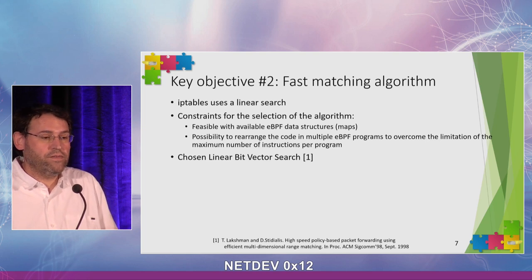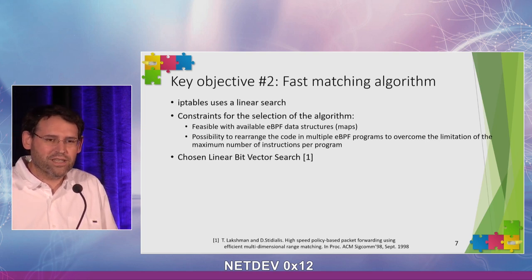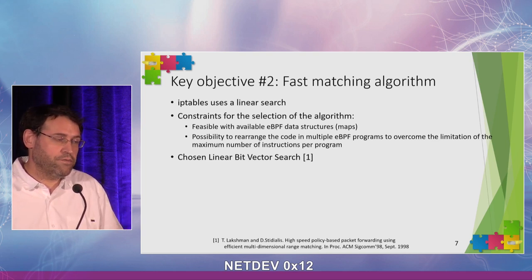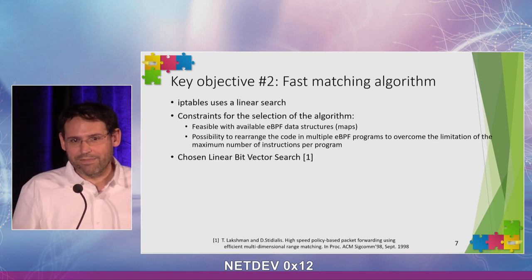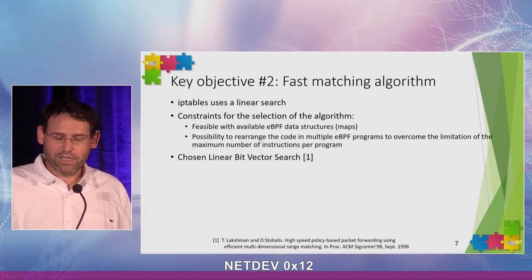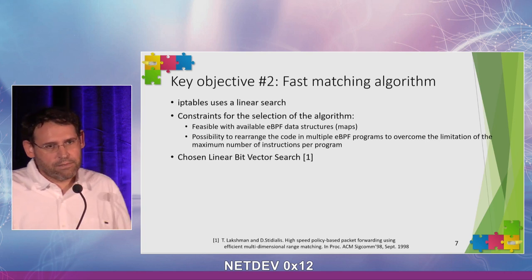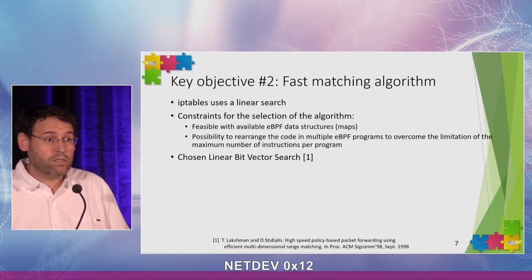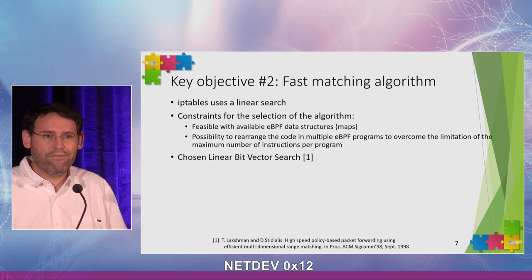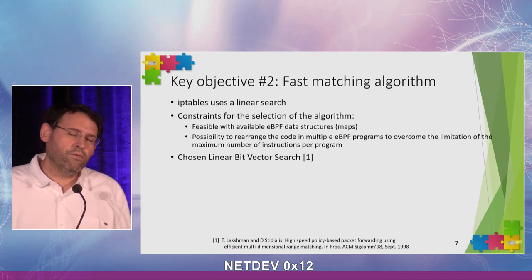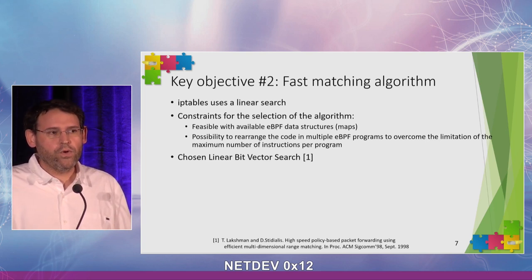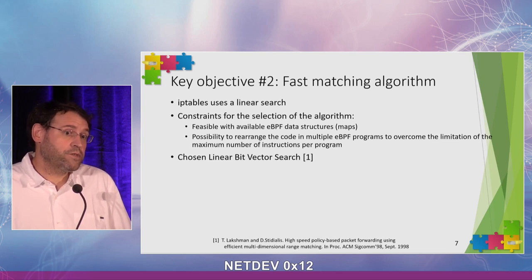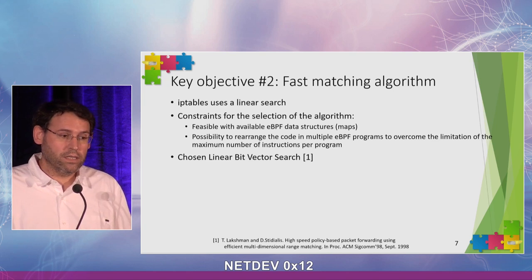The second key objective is a fast matching algorithm. IP tables uses linear search to match filter rules, which is slow. There are plenty of options to go faster, but unfortunately it's not easy in eBPF because the matching algorithm must work within all the limitations of the eBPF technology. In eBPF you don't have arbitrary memory — you have maps available, which are structured memory. You have to implement an algorithm that is feasible with the current map structures available in eBPF.